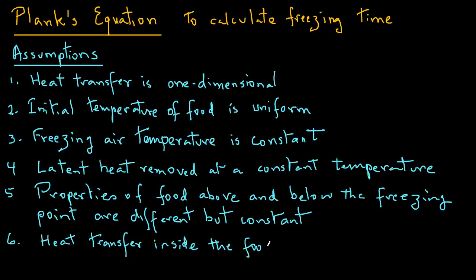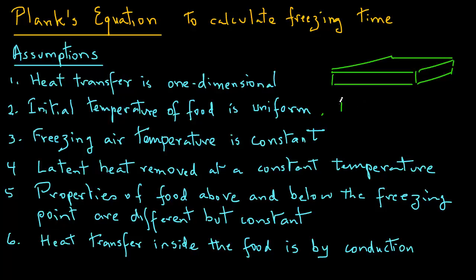Planck also assumed that heat transfer within the food is by conduction only. The first assumption — that heat transfer is one dimensional — means that we are looking at, for example, heat transfer in a very thin slab, so heat transfer is only along one of the dimensions of that slab. The uniform initial temperature is Tf, the freezing point, and the freezing air temperature is Ta. Typically in commercial freezers, minus 40 degrees C is used as the freezing air temperature, and latent heat removal is at that constant temperature of Tf.